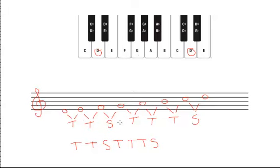This tone-tone-semitone pattern is what the intervals should be between these notes, not what they currently are. So we have to go through on our keyboard and determine what the notes should be. A semitone is the closest possible distance between two notes on a piano, and a tone being two semitones. Between our first two notes, D and E, we should have a tone. So let's go up two semitones to our second note, which will be an E. Our second note is just a plain E — we don't have to do anything to that note.